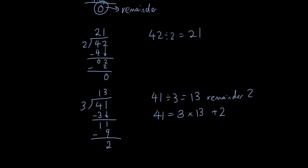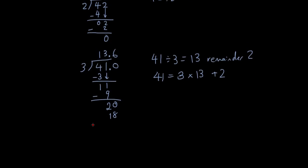You also have another option — to keep going. Put a decimal point after the 41, add a 0, and this decimal point lines up with your answer, so put a decimal point in your answer as well. Because you've added a 0 after the decimal point, bring the 0 down. Now think: 3 times what is smaller than 20? 3 times 6 is 18.